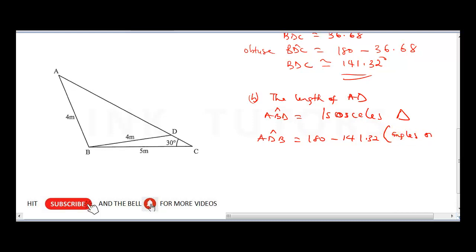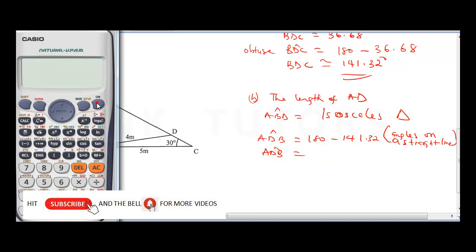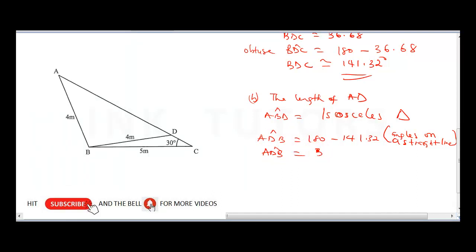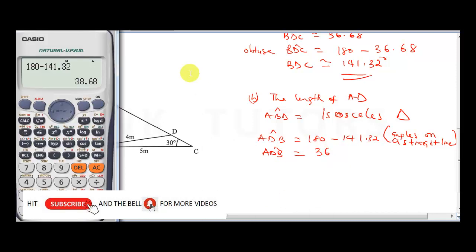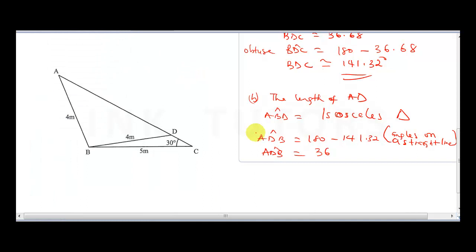The reason is that these angles lie on a straight line, and angles on a straight line sum to 180. So 180 minus 141.32 gives us angle ADB equals 38.68 degrees.